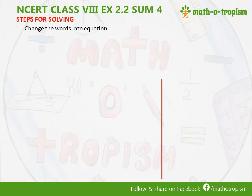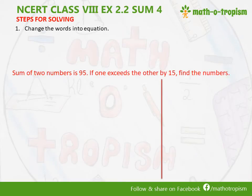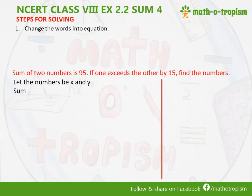The first step in solving is changing the words into an equation. Sum of two numbers is 95. If one exceeds the other by 15, find the numbers — this is the clue. So let the numbers be x and y. They have given sum is equal to 95, so x plus y equals 95. We will keep this as equation 1.